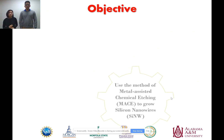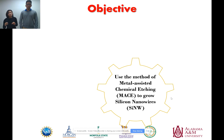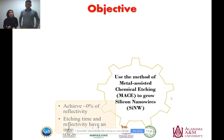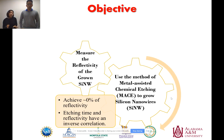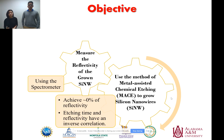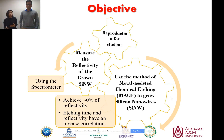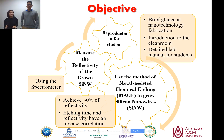Our goal for this project is to use MACE to grow silicon nanowires. We aim to reach approximately zero percent reflectivity, and at the same time we would like to see the relationship between the etching time and the reflectivity. We also aim to measure the reflectivity of the grown silicon nanowires using spectrometers, and use this project as an educational resource introducing students to nanotechnology and as a detailed lab manual.